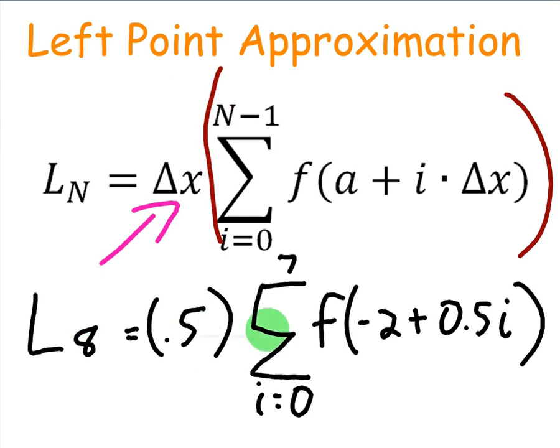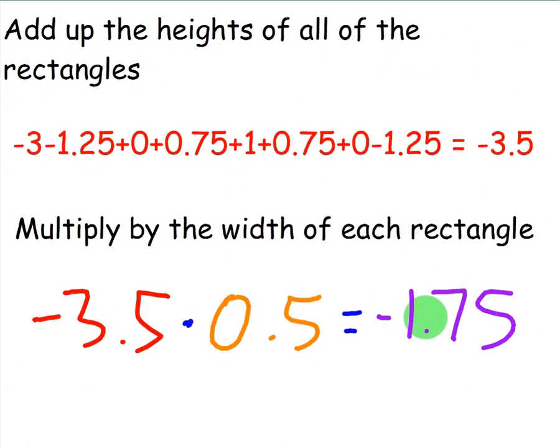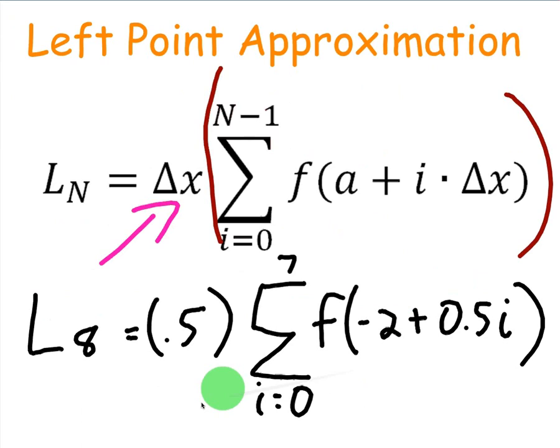Now, one more thing you're probably wondering is, when we come up with the summation notation, how do we evaluate this quickly? In other words, how do we not have to add up all of the heights of these rectangles and then multiply by the width? What's the point of this formula if we're not going to use it?